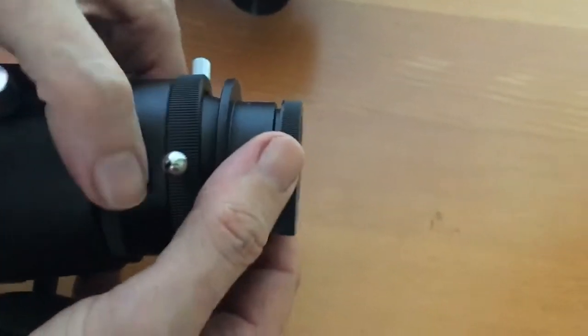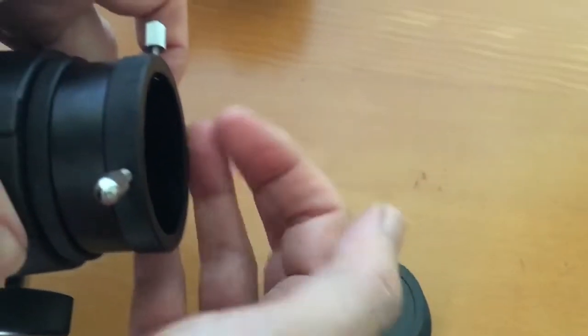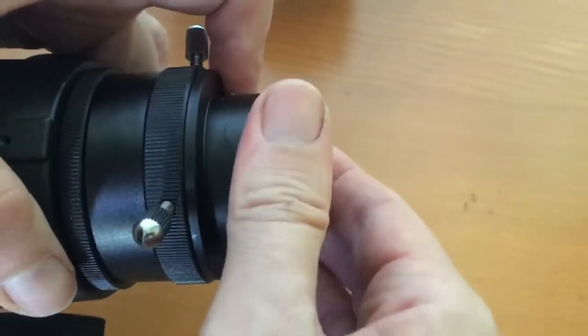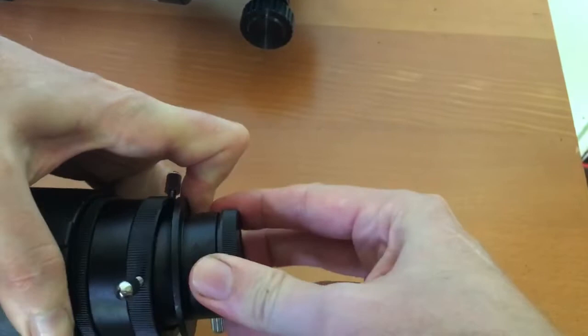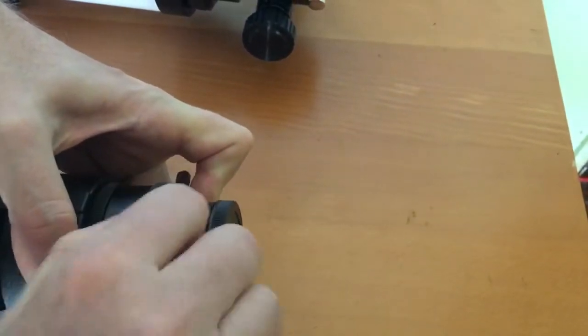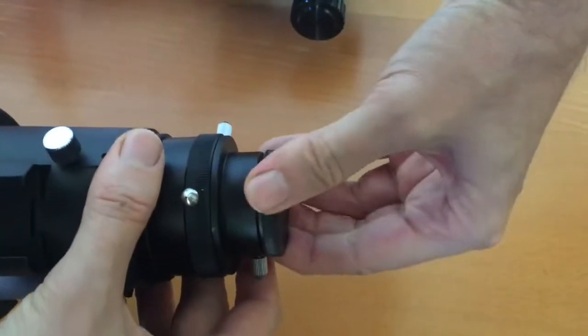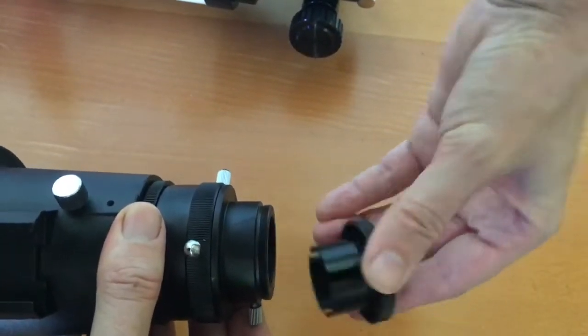I'll just try and get this out. There's the other one, there's a secondary one. So there we go, that comes out. And then you can put in your 2 inch diagonal in there. Of course it does come with an adapter which is what this is. You take off the back end here and you can use your regular 1.25 inch eyepieces with it.